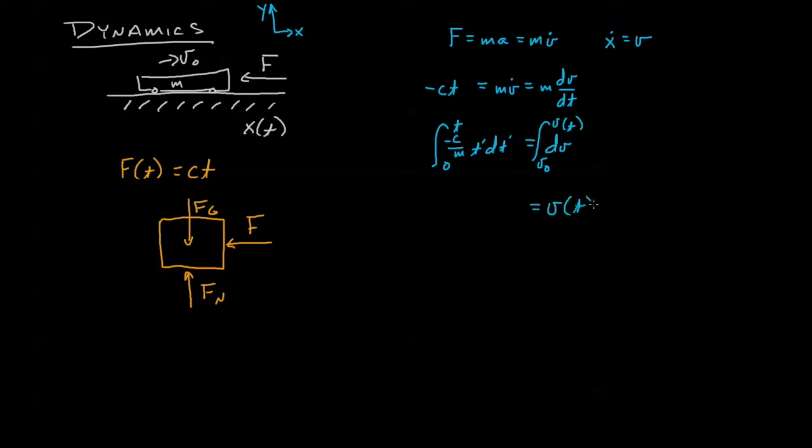We find that equals V of T minus V naught on the right, and on the left we have negative C over M times T squared over two minus zero squared over two. I put this down as a placeholder to remember to always use both limits on your integral. We found velocity as a function of time equals negative C over M, T squared over two plus V naught.